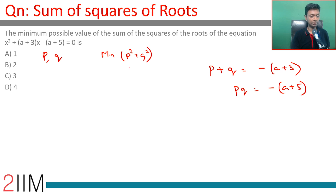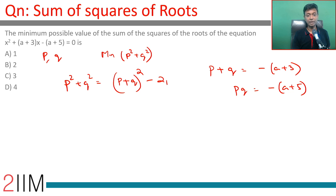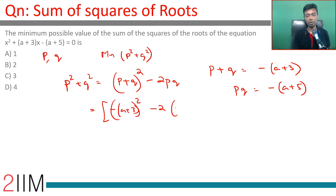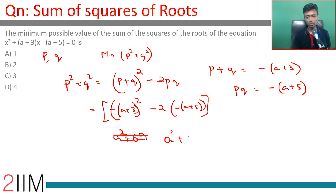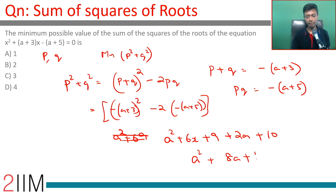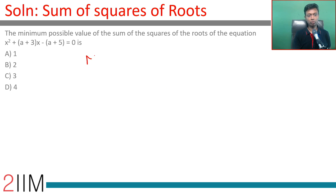We want to write p squared plus q squared in terms of p plus q and pq. It will be (p plus q) whole squared minus 2pq, which expands as p squared plus q squared plus 2pq minus 2pq. Substituting, this expression becomes minus of (a plus 3) the whole square minus 2 times minus of (a plus 5), giving a squared plus 6a plus 9 plus 2a plus 10, which simplifies to a squared plus 8a plus 19.